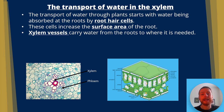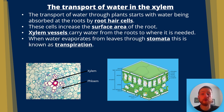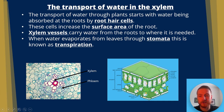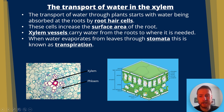Xylem vessels carry water from the roots to where it's needed. When water evaporates through leaves through pores called stomata, this process is known as transpiration. In the bottom left diagram, we've got the phloem on the outside of the vascular bundle and the xylem in the middle. That's going to become more important when we look at ringing experiments and translocation, so keep in mind that the phloem tends to be on the outside.